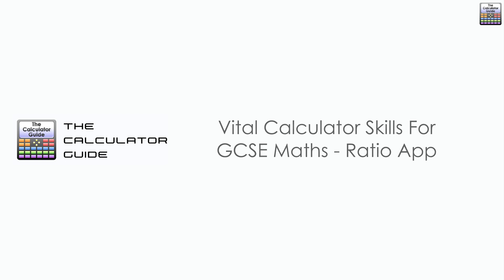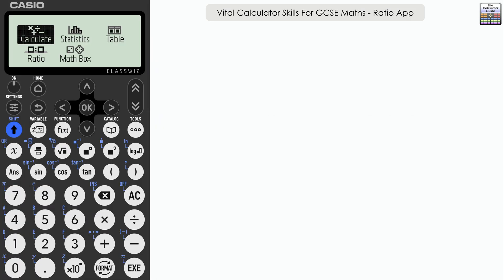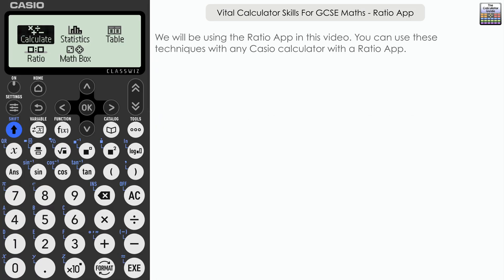Hello and welcome to the Calculator Guide video on vital calculator skills for GCSE maths — the ratio app. We are going to be using the ratio app in this video. I'm doing this on a Casio ClassWiz 83 or 85 GT CW model, but you can follow along if you have any model of Casio ClassWiz that has the ratio app available.